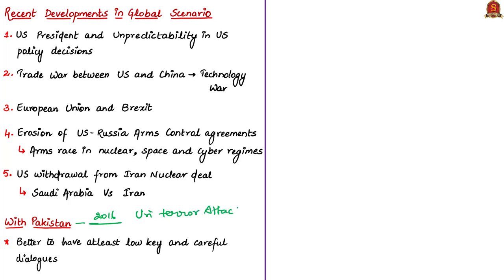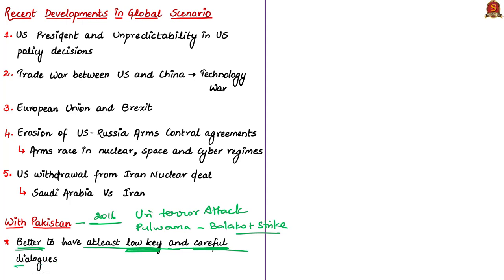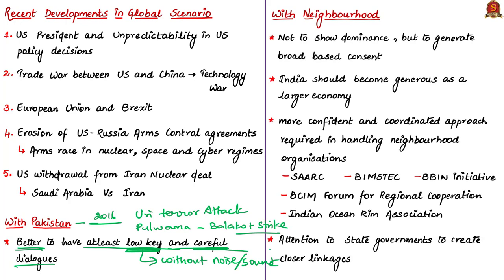Recently there was the Pulwama terrorist attack and its aftermath — the Balakot airstrike. With regard to Pakistan, the author states that rather than having no communication between the two countries, it is better to have some kind of low-key and careful dialogue — quiet dialogue without much sound or noise — as this may help in giving nuances and leverages at the required time. With respect to the neighborhood, the author asks India not to show dominance in the region, but rather to generate a broad-based consent.